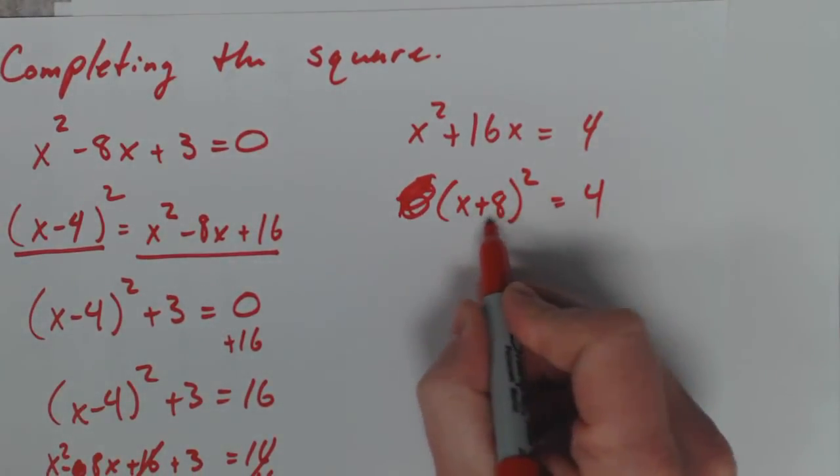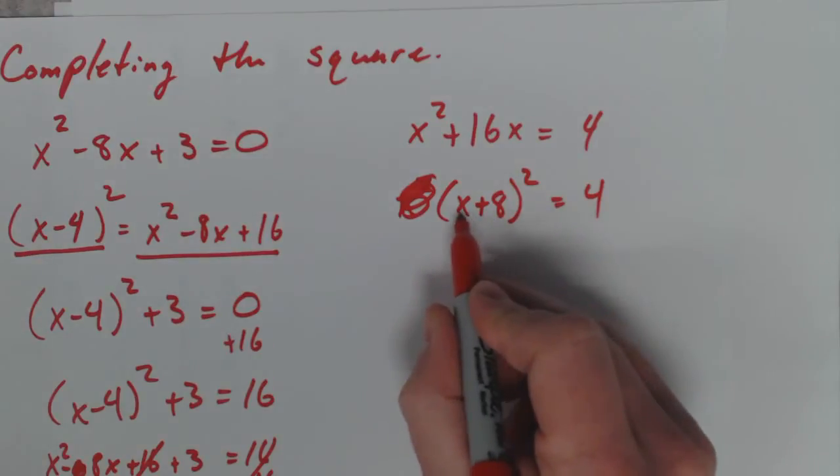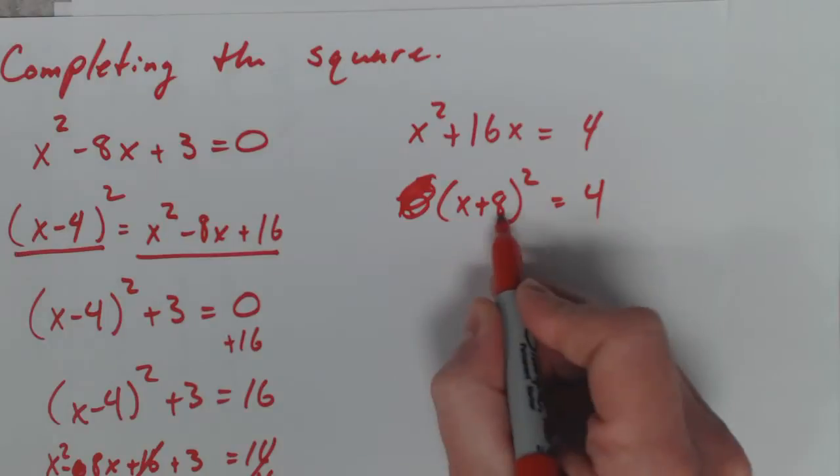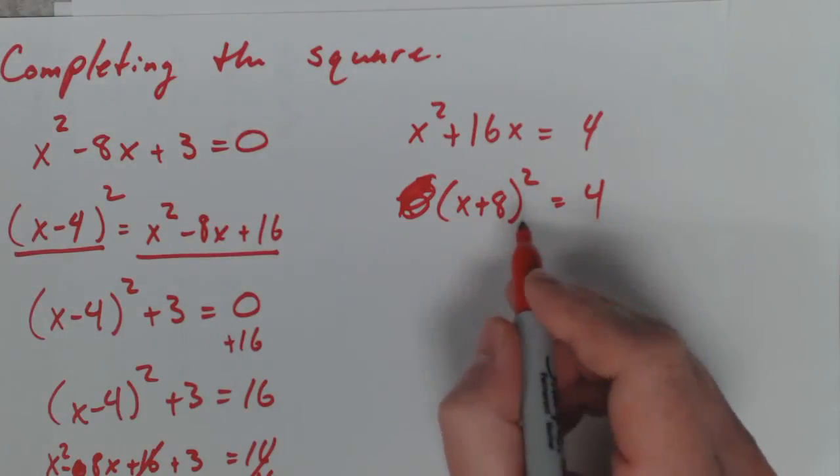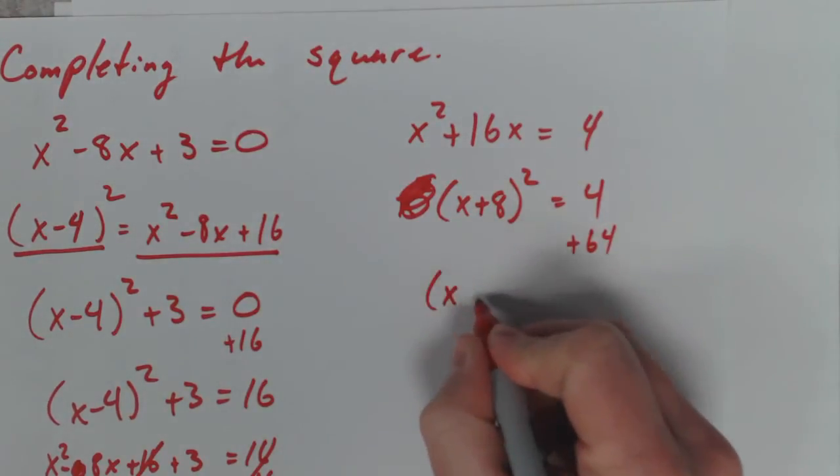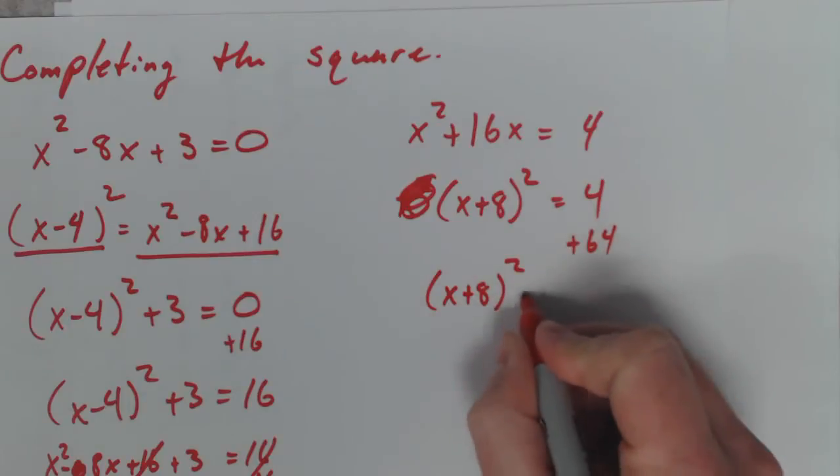I'm just going to rewrite the rest of it. Well, inside of this, remember what happens if you multiply this out? It would be x squared plus 16x plus 64. There's a plus 64 inside here. So, you've added 64 to the left side by writing it like this. So, add 64 over here. And you wind up with x plus 8 squared equals 68.